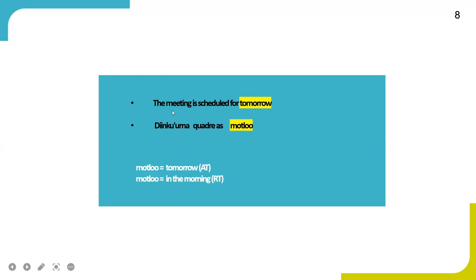The next example is 'the meeting is scheduled for tomorrow,' which involves a temporal expression. A Gorwa speaker says 'Dinkoma Quadre has Motlu.' Motlu here stands for 'tomorrow.' But in Gorwa, Motlu can have two different meanings: one is 'tomorrow' and the other is 'in the morning.' When Motlu is used as an absolute time, it means 'tomorrow.' When it is used as a relative time, it means 'in the morning.' In my example, Motlu is used as an absolute time, so it means 'tomorrow.'